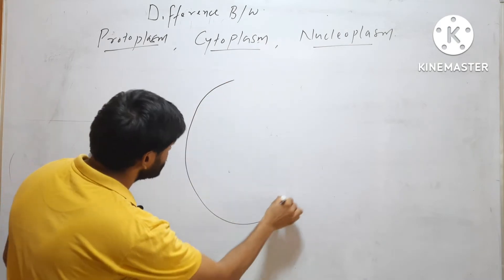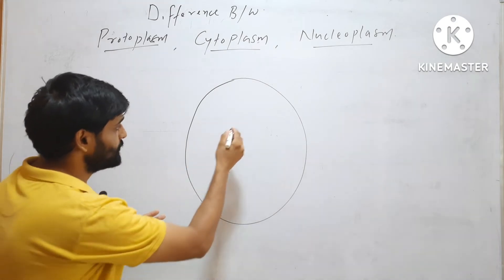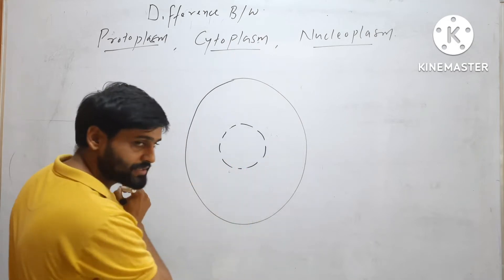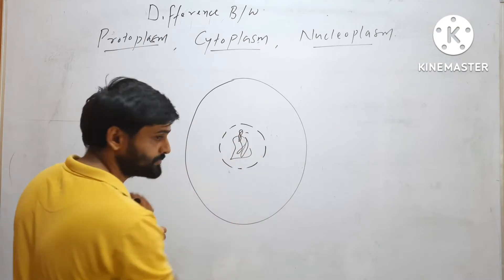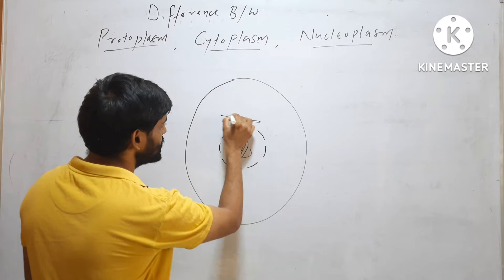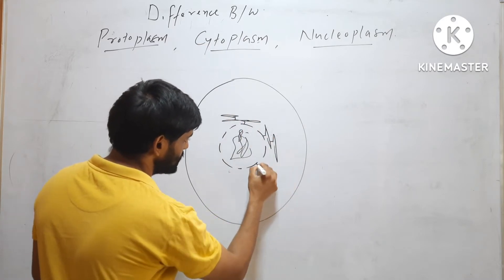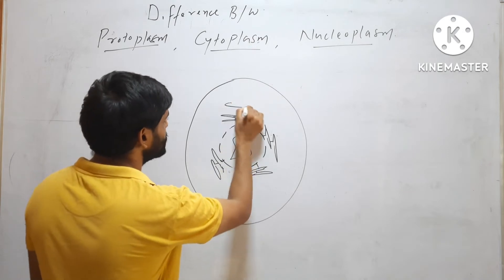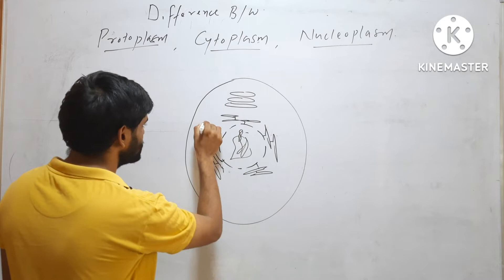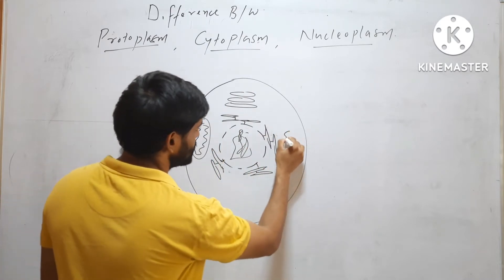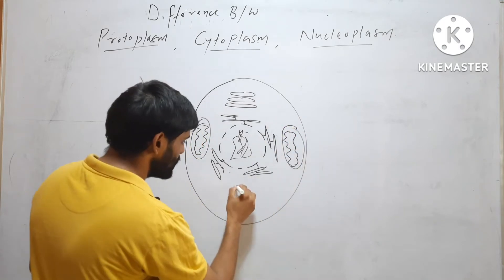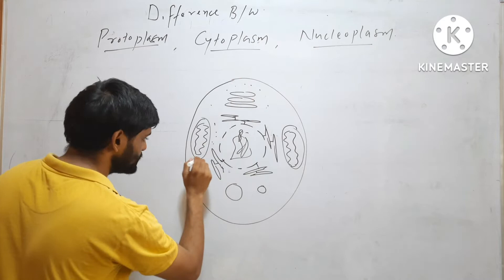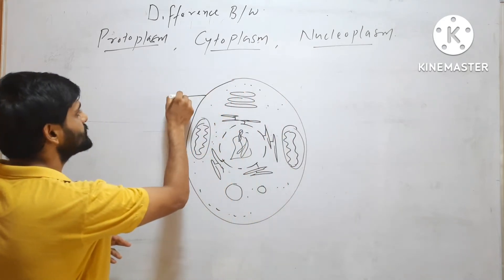Suppose this is a cell — a eukaryotic cell. We know that a eukaryotic cell has a nucleus in the center and it also has organelles like endoplasmic reticulum, Golgi body, mitochondria, vacuole, lysosomes, and many others. And this outer covering is the cell membrane.